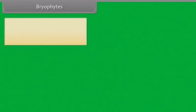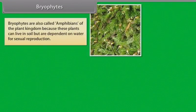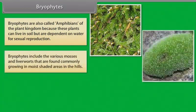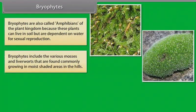Bryophytes are also called amphibians of the plant kingdom because these plants can live in soil but are dependent on water for sexual reproduction. Bryophytes include the various mosses and liverworts that are found commonly growing in moist shaded areas in the hills.